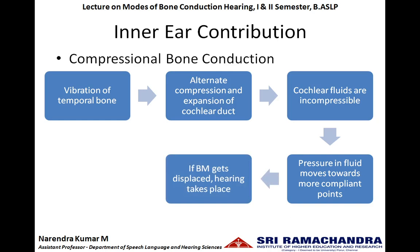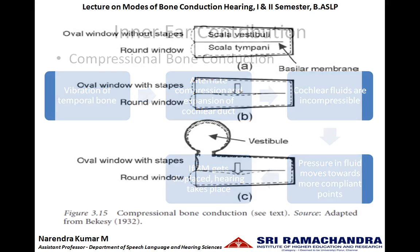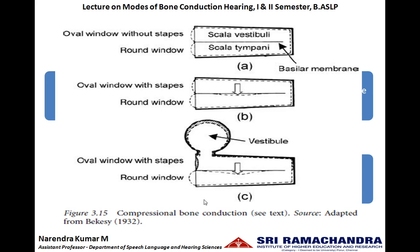If the fluids in this movement process displace the basilar membrane, then hearing will occur. If both the oval window and round window are equally compliant, the pressure will be easily released through both windows by bulging, resulting in zero force acting on the basilar membrane and no displacement of the basilar membrane.